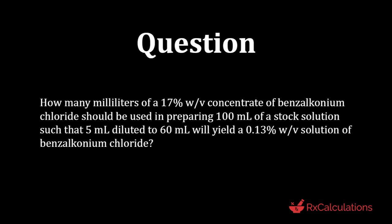This question says: how many milliliters of a 17% weight-by-volume concentrate of benzalkonium chloride should be used in preparing 100 milliliters of a stock solution such that 5 milliliters diluted to 60 milliliters will yield a 0.13% weight-by-volume solution of benzalkonium chloride?